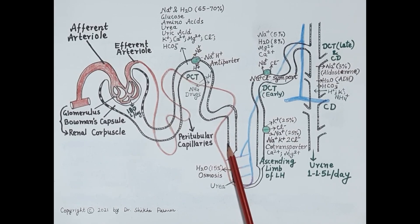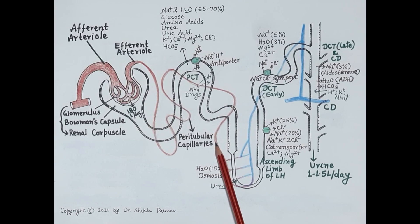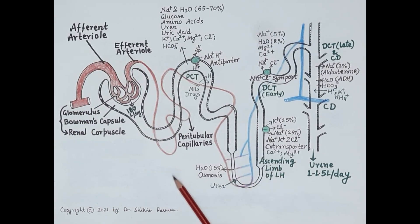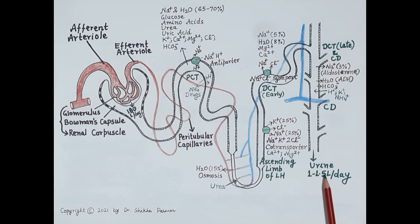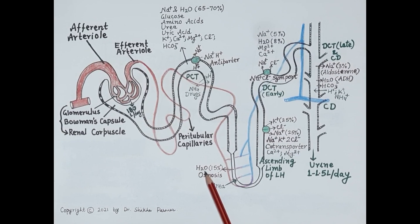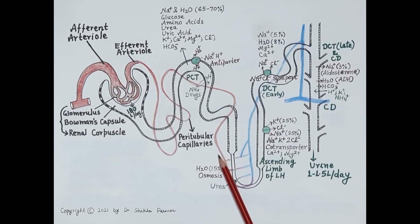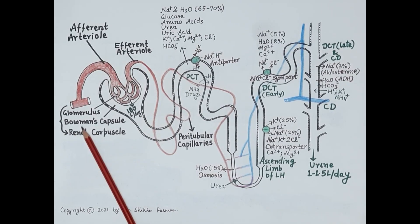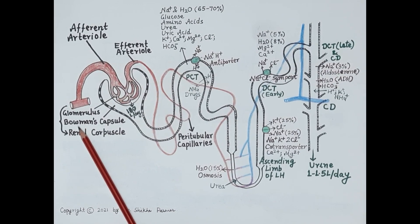Absorption of water in the collecting duct is tightly regulated by antidiuretic hormone, whereas reabsorption of sodium is regulated by aldosterone. Diuretics are agents that act upon the kidney and increase the volume of urine, thereby reducing blood volume. Diuretics decrease reabsorption of sodium and water from the lumen into the peritubular capillaries, causing net loss of sodium and water in the urine. They are primarily useful in management of edema and hypertension.